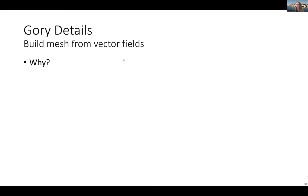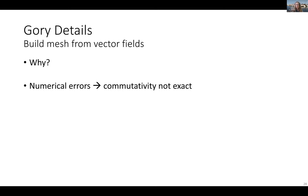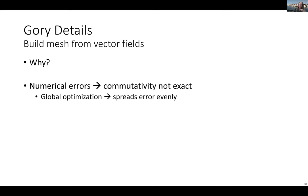Why do we build the mesh from vector fields this way, instead of putting one quad after another? Essentially any iterative process is going to accumulate errors. Since we're doing a global optimization, the objective is not going to be zero because this is a very non-convex problem. The commutativity is not going to be exact. Once you do the global optimization, this spreads the error evenly across the surface instead of putting all the error at the end. This is the way people have done parametrization for a long time.